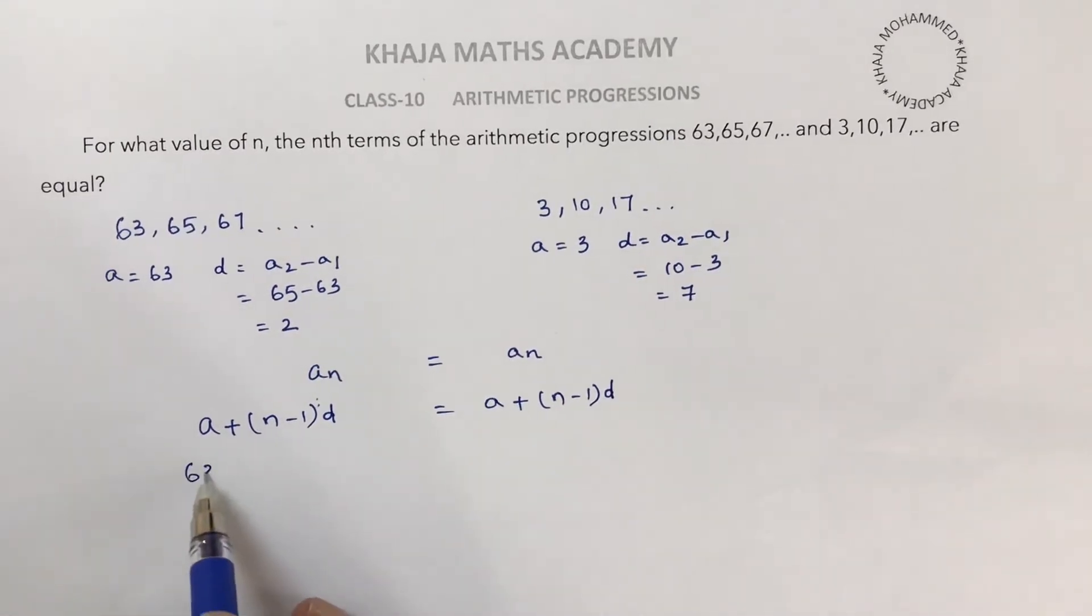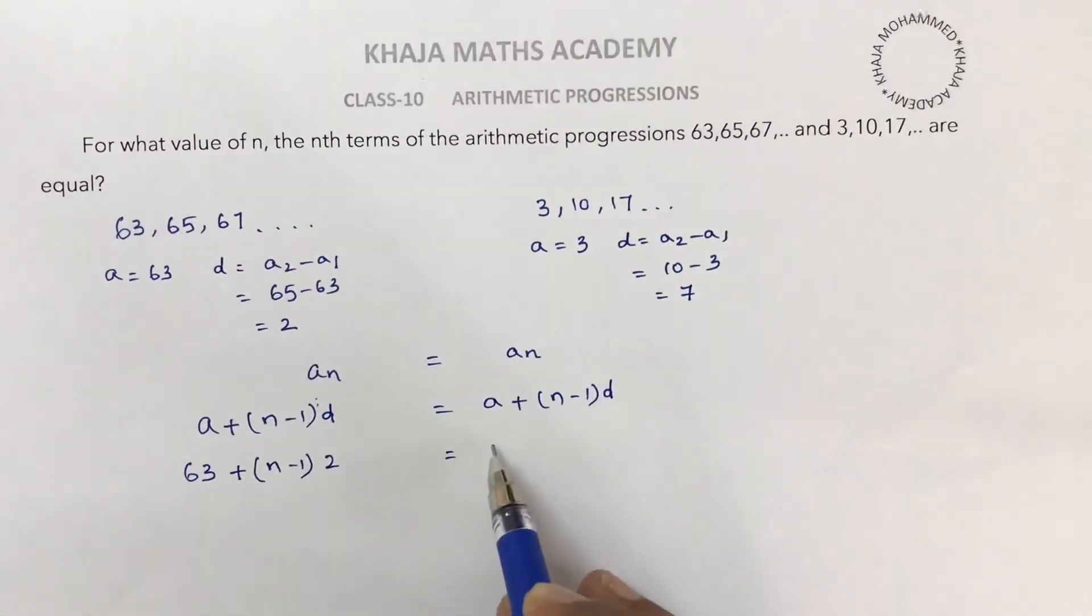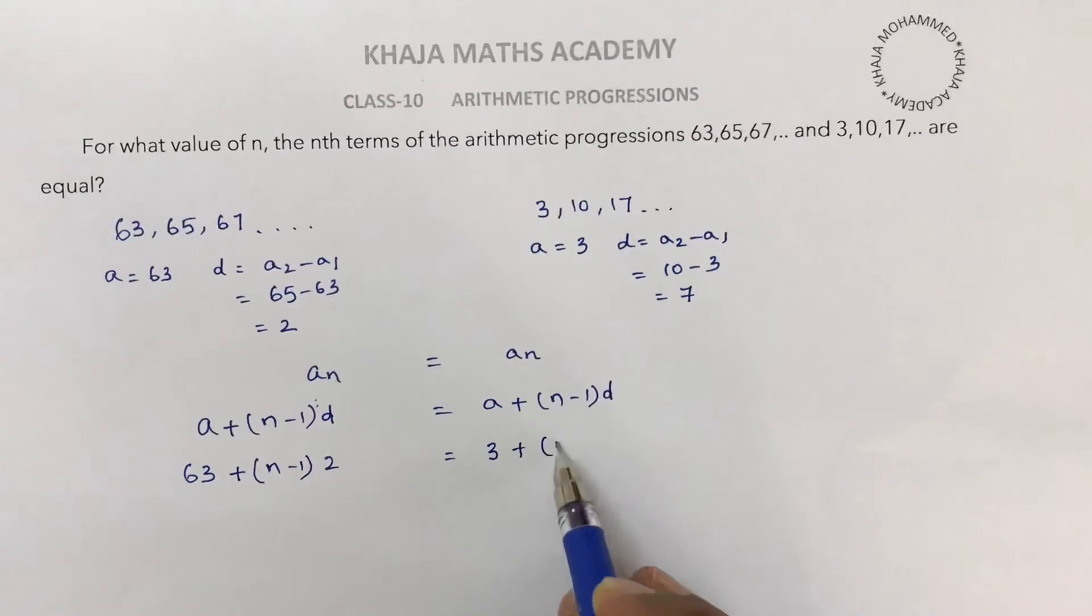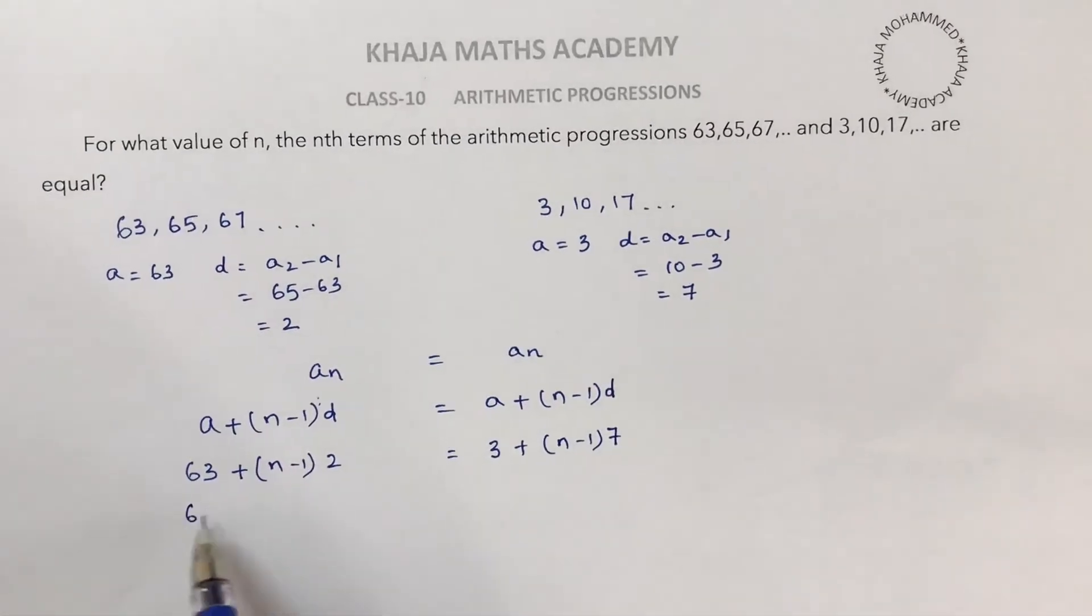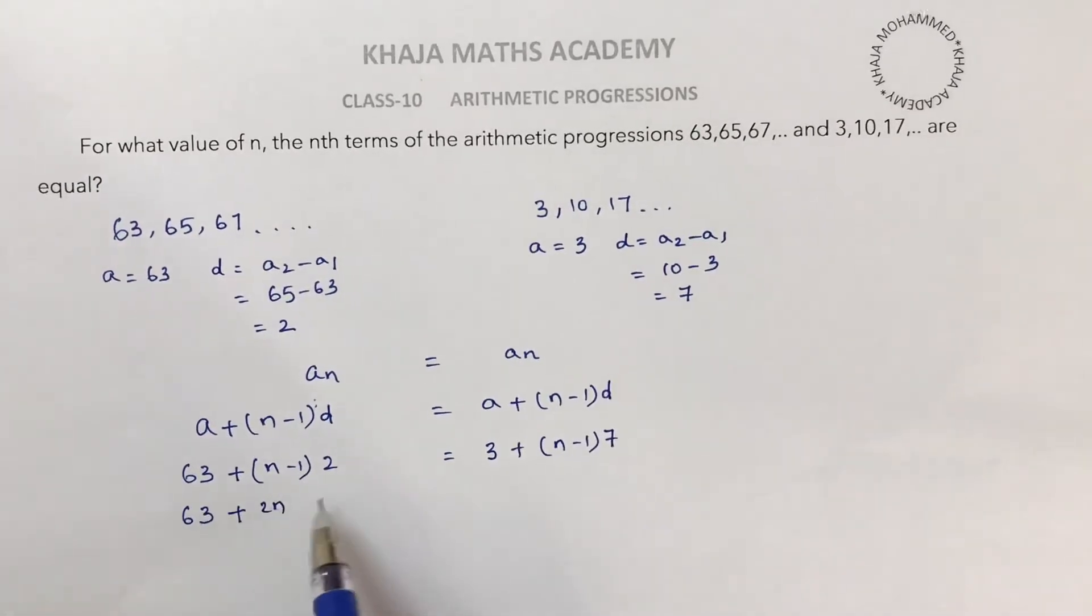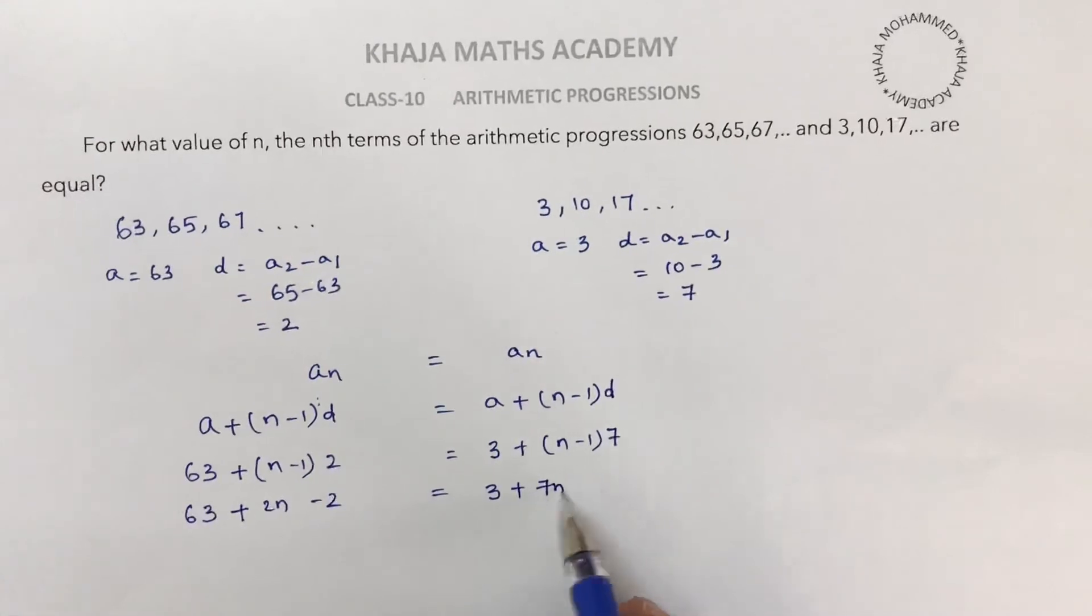Here a is 63 plus (n minus 1), and d value is 2. Here a is 3, (n minus 1), and d value is 7. If we simplify: 63 plus 2n minus 2 equals 3 plus 7n